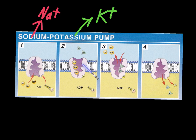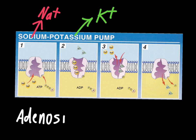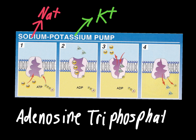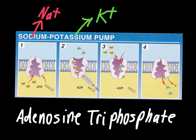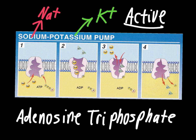This process takes ATP — adenosine triphosphate. The important part of that term is the 'tri' part: triphosphate refers to the three phosphates on the end of the ATP molecule. What happens is ATP gives up one of those phosphates, which bonds to the sodium-potassium pump. That's what provides the energy for it to move things in and out of the cell. So this is an example of active transport, with the energy coming from ATP giving up one of its phosphates.